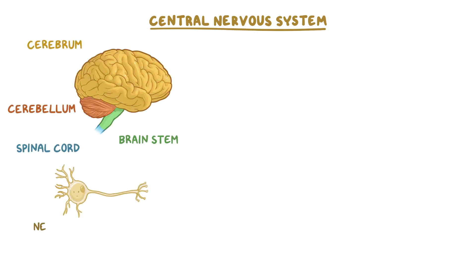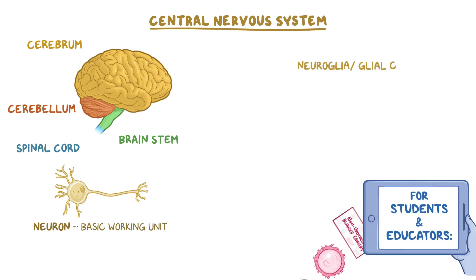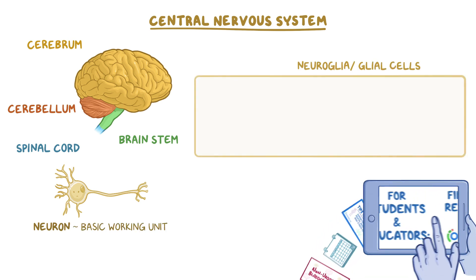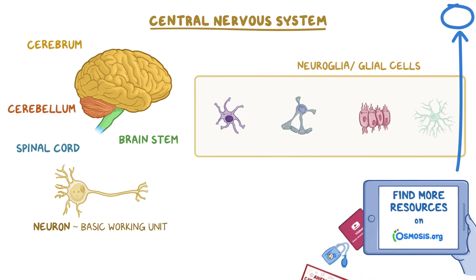The neuron is the basic working unit of the nervous system, and the neuroglia, or glial cells, are the non-neuronal cells that support and protect the nervous system.